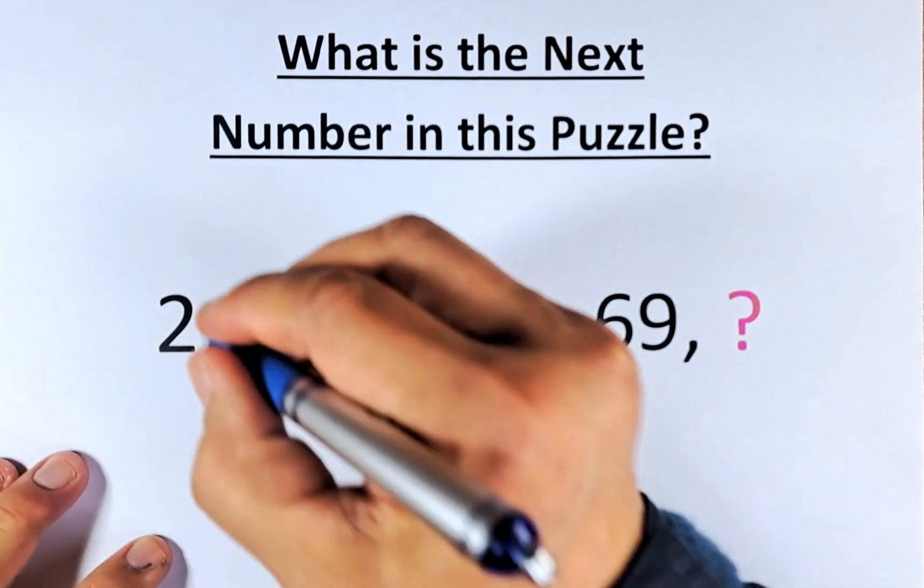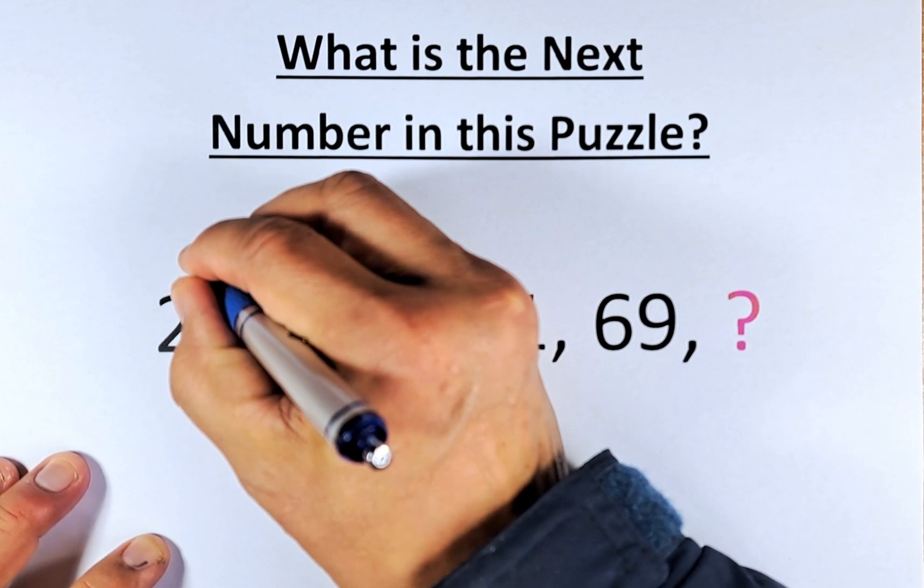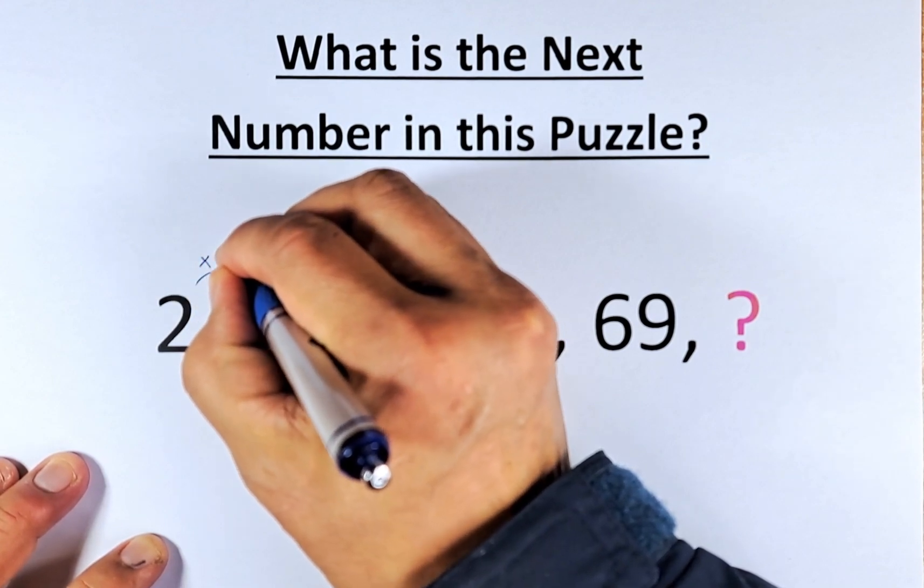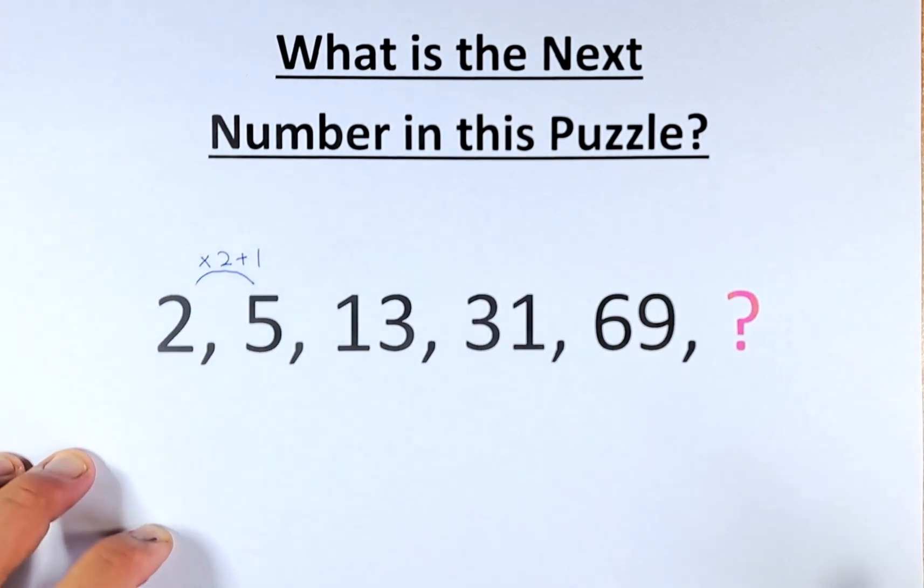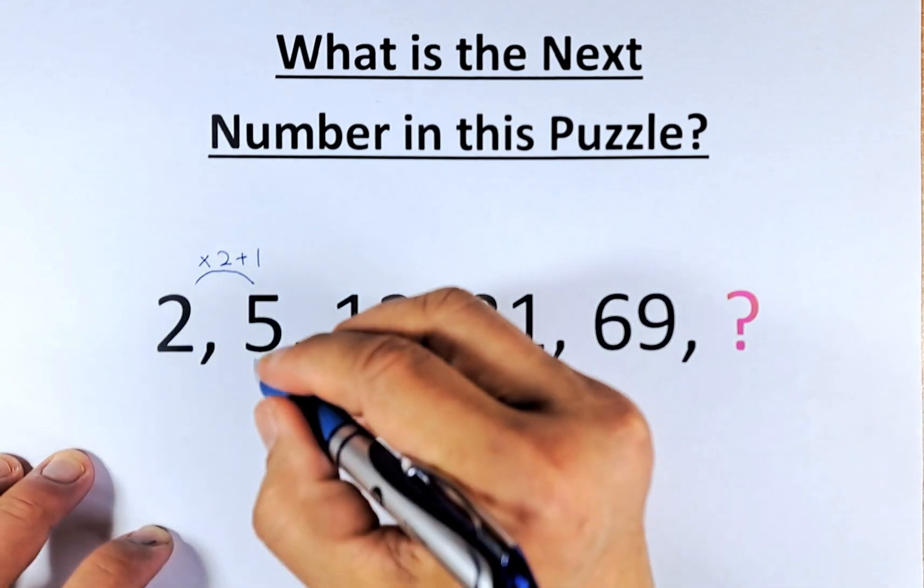So to get from 2 to 5, we are just going to multiply by 2 and add 1. So 2 times 2 is 4, 4 plus 1, that will give us 5.